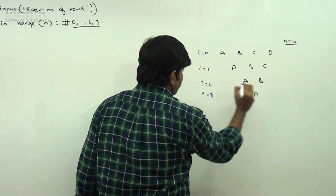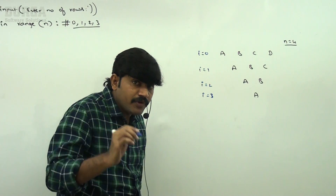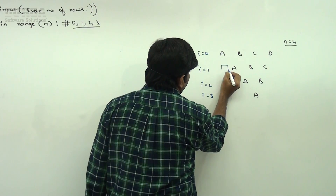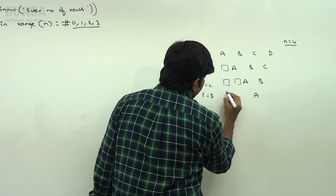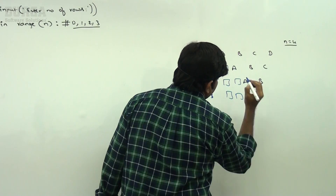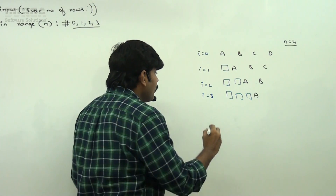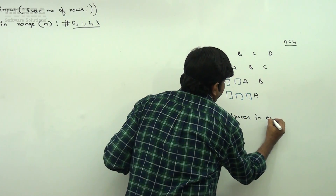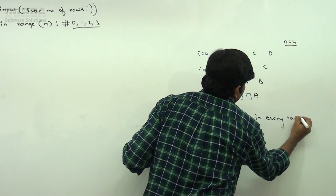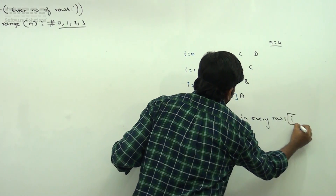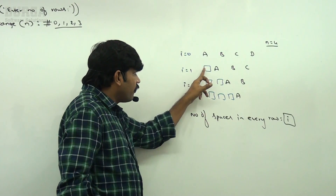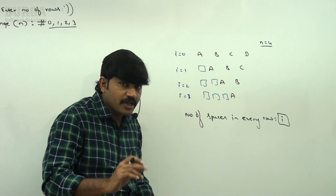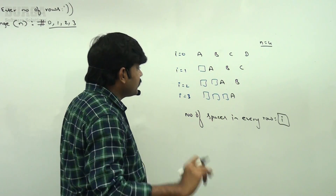In every row, spaces are present. The first row has zero spaces, the second has one space, the third has two spaces, and the fourth has three spaces. So the number of spaces in every row equals i — when i is 0: zero spaces, i is 1: one space, i is 2: two spaces, i is 3: three spaces.